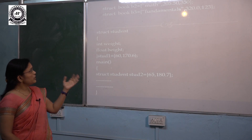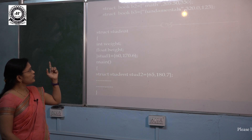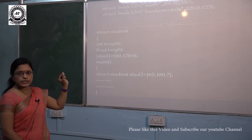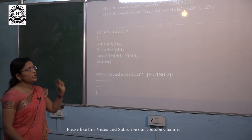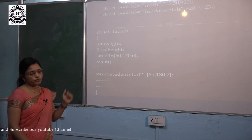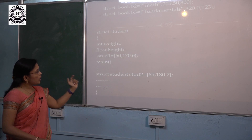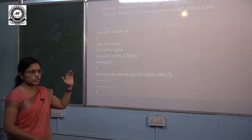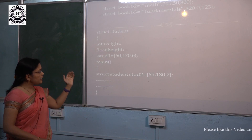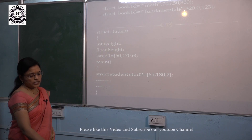Apart from this, we can initialize the structure variable using the tag name. In this example, using the keyword struct, then tag name 'book' and the variable name b2, we have used the assignment operator and given the values in curly braces. All these values may be reused for different variables. We can see the complete structure definition — along with its structure variable declaration and initialization — placed above the main function, and in the main function also we can define and initialize additional variables.